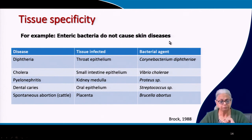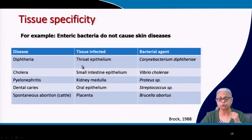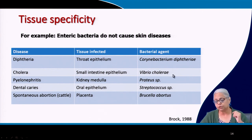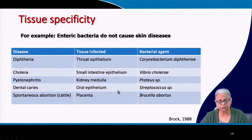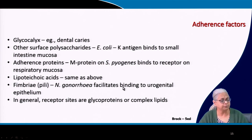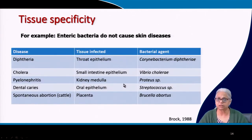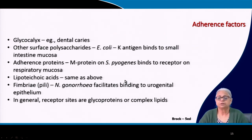Some examples of tissue specificity: diphtheria — caused by Corynebacterium diphtheriae — attacks the throat epithelium. Cholera — caused by Vibrio cholerae — attacks the epithelium of the small intestine. Pyelonephritis attacks the kidney medulla and is caused by Proteus species. Dental cavities attack the oral epithelium and are caused by Streptococcus species. Spontaneous abortion in cattle attacks the placenta, caused by Brucella abortus.